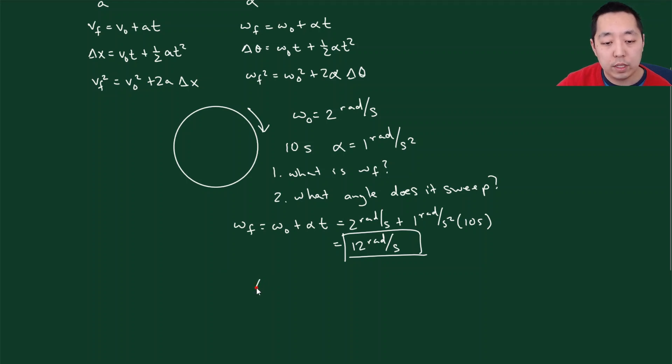Now for the angle that it's sweeping, I might use this equation. Omega 0 was, again, 2 radians per second times 10 seconds plus 1 half. Alpha was 1 radians per second squared times 10 seconds squared. This is 20 plus 100 times 1 half, that's 50. 20 plus 50 is 70 radians per second. Okay. Oh, no, not radians per second. Radians. 70 radians.